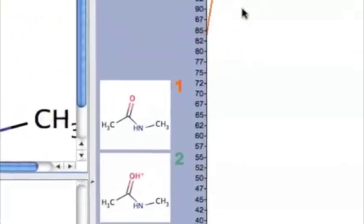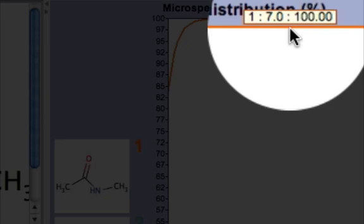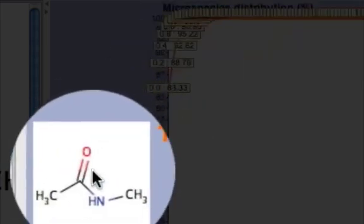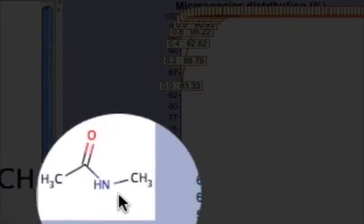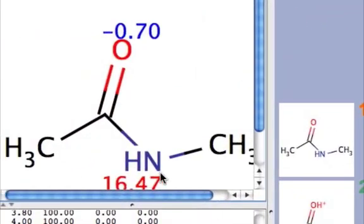So at pH 7, shown in this graph, this particular compound. Now the pKa value of that amide proton here is shown in red at 16.47. So at a pH value of 16.47, 50% of these protons will be deprotonated.